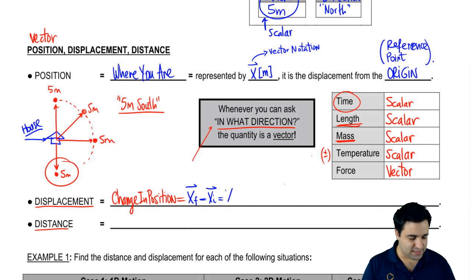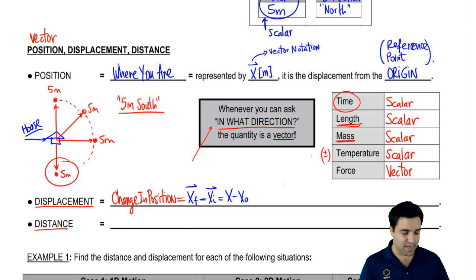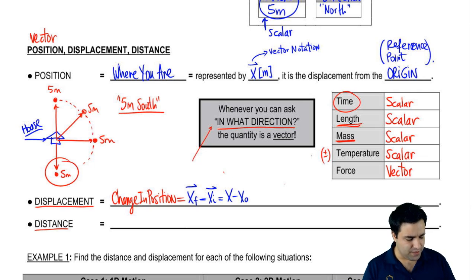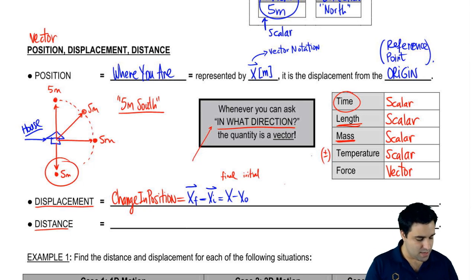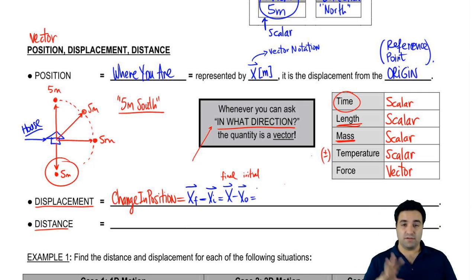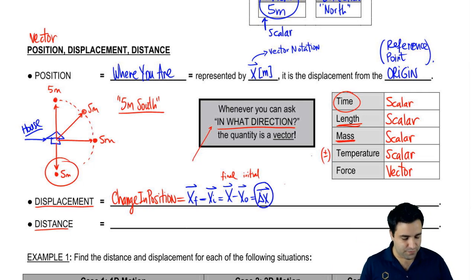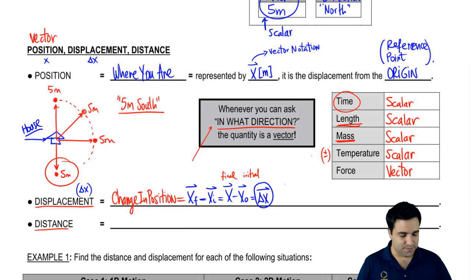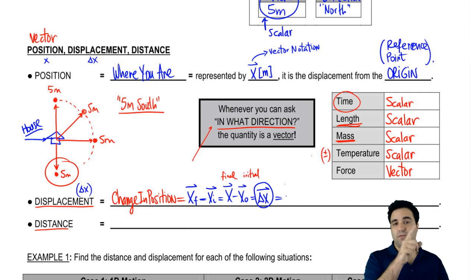Another way to write this is X minus X-naught, where X without anything means final and X with a zero means initial — technically it's 'X naught'. Any time in physics you have final minus initial, you can use delta notation. So it looks like this: delta X. The variable for displacement is delta X, and position is X. Displacement is delta X. And it is a vector because direction matters — you could be going from left to right or right to left.